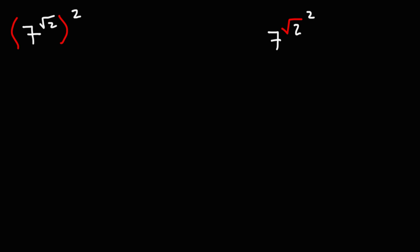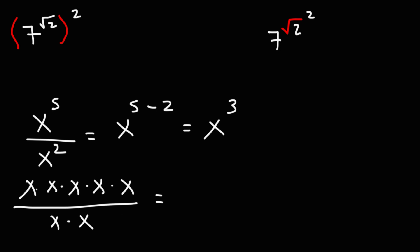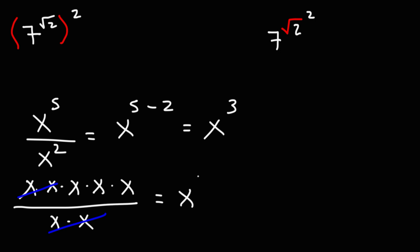When you multiply terms with the same bases, you can add the exponents. When you're dividing, if the base is the same, you can subtract the exponents. So x⁵ divided by x² is 5 minus 2, which is x³. You can cancel two of the x variables on top and bottom, leaving three x variables, which is x to the third.